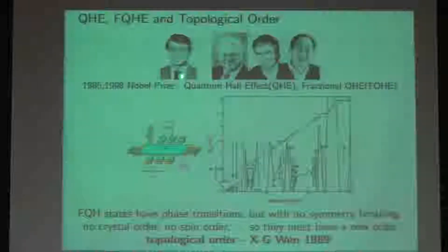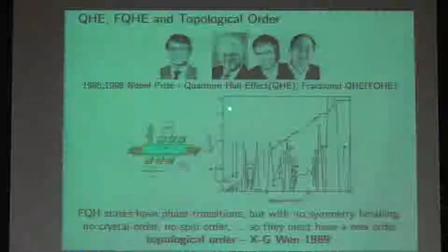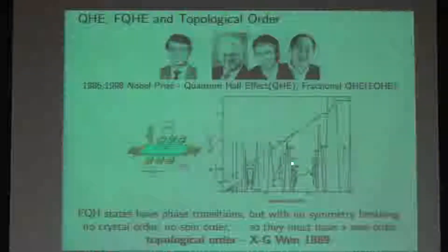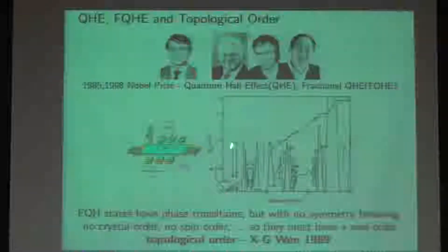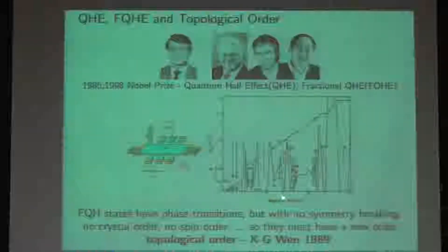Eight Nobel Prizes were awarded — to von Klitzing, and to Laughlin, Störmer, and Tsui. There are quantum Hall states and fractional quantum Hall states. In the case where you apply a strong magnetic field on a sample, you can measure the Hall conductance and Hall resistivity. The precision is remarkable — you can even use it to test fundamental constants.